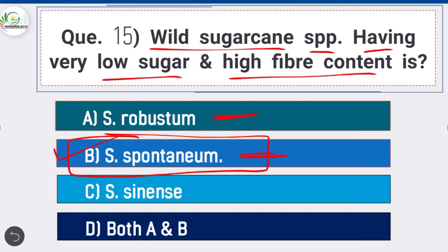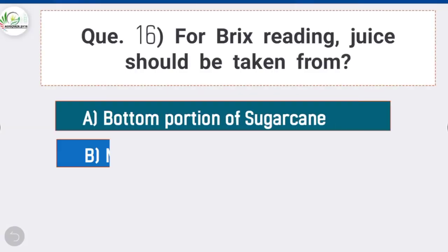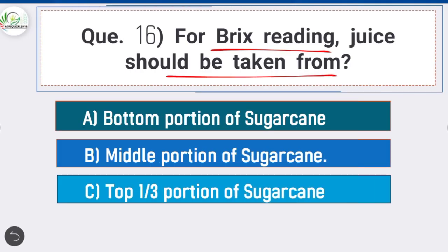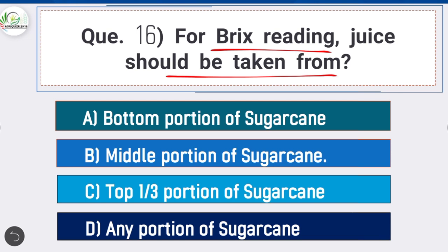Question 16: For Brix reading, juice should be taken from — option B is correct: middle portion of sugarcane. Sugarcane is considered mature if Brix value or refractometer reading is 16 to 18. For Brix reading, juice should be taken from the middle portion of the stalk.